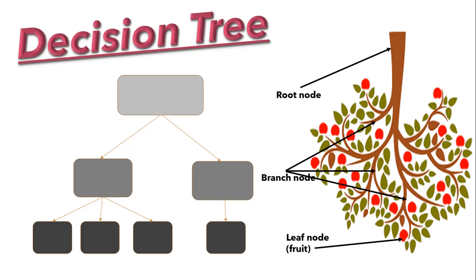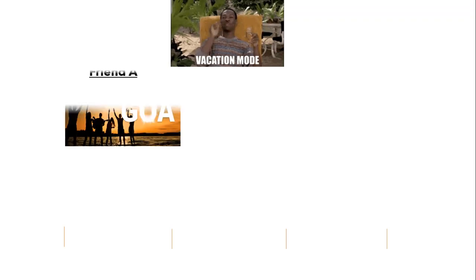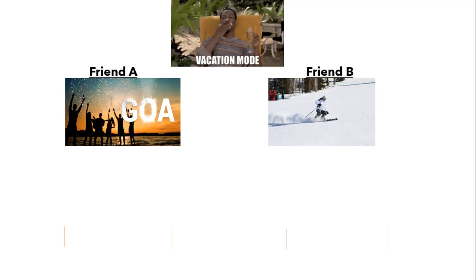Let's understand this with one example. Suppose you want to go out for a vacation but you're not sure where you should go. What you will do is go to your friends and ask them to suggest you any place, and then you will categorize those places with some conditions. Let's say your friend A is suggesting you to go to Goa and friend B is suggesting you to go to Uttarakhand.